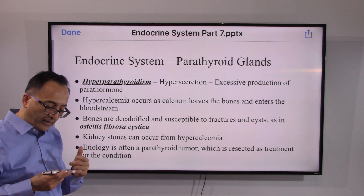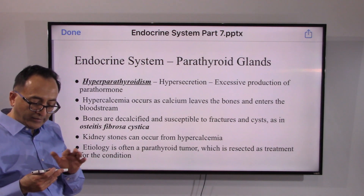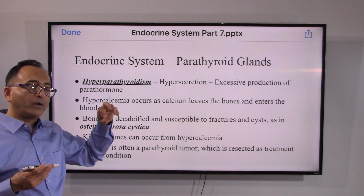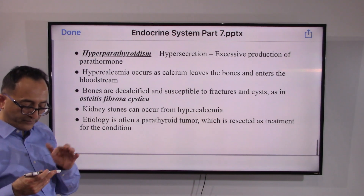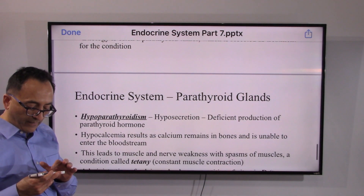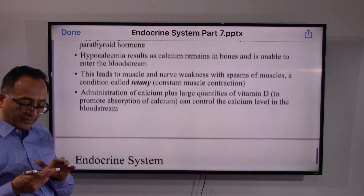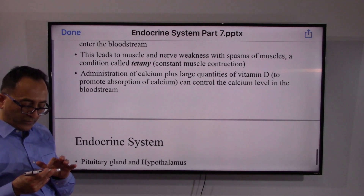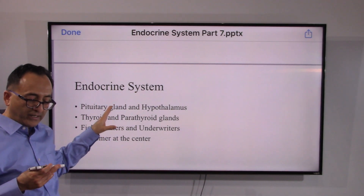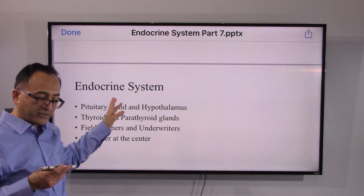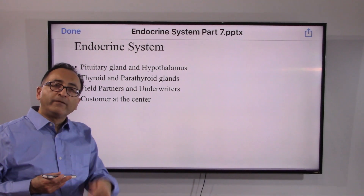Moving on to the parathyroid — as we know with the endocrine system, it could be hyper (overactive) or hypo (underactive). This can lead to having too much calcium in bone or too much calcium in blood. Either scenario is not good and can lead to disorders. If needed, vitamin D can help restore homeostasis. The pituitary gland, hypothalamus, thyroid, and parathyroid work like partners — just as underwriters work to ultimately serve customers.